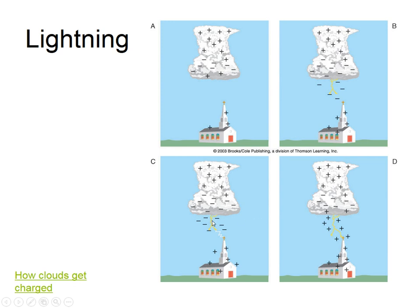When the stepped leader gets really close to the ground, the ground will often send up what's called a positive streamer. You can see the positive streamer coming up from the tree or from the ground — it's positively charged. When they connect, they form the actual lightning bolt. The positives are draining from the ground going up into the cloud to neutralize it.